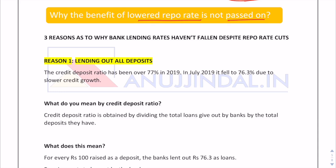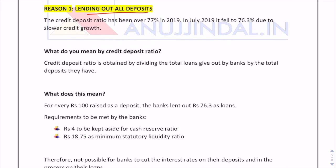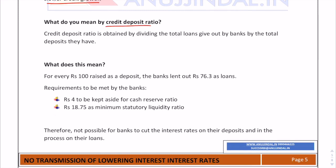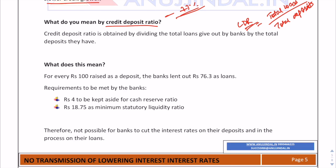The first reason is that banks are lending out all their deposits. The Credit Deposit Ratio (CDR) has been largely around 77 percent in 2019, but in July 2019 it fell to 76.3 percent due to slower credit growth. The credit deposit ratio is total loans given by banks divided by total deposits received — so a CDR of around 77 percent means banks are lending out almost all available funds.